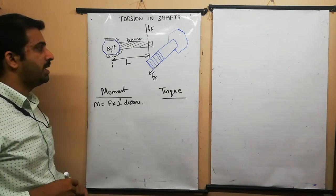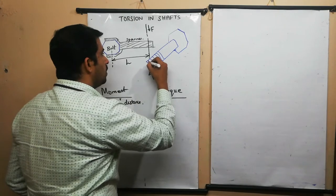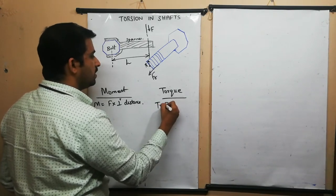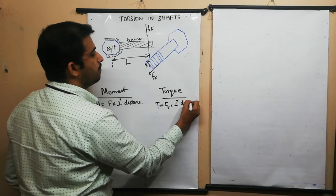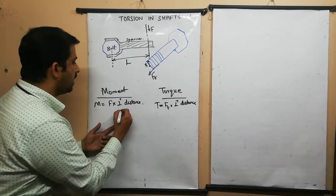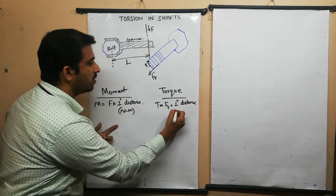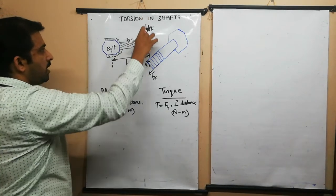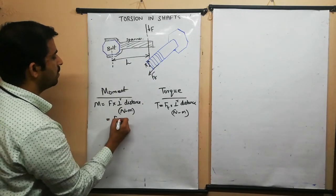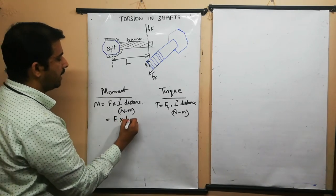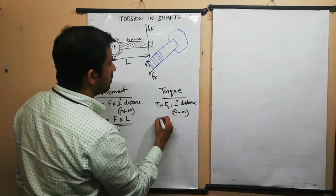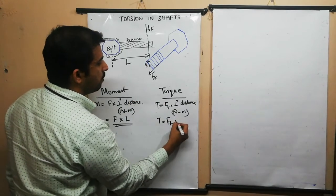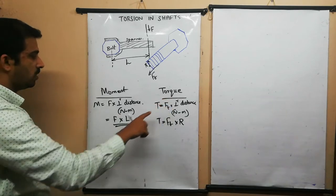Let us consider the radius of this bolt as capital R. Then torque T equals the tangential force multiplied by the perpendicular distance — here, the radius. We can see both terms yield Newton-metres. The difference is: for moment, M = F × L (the perpendicular distance to the longitudinal axis); for torque, T = F × R (tangential force multiplied by the radius of the bolt).